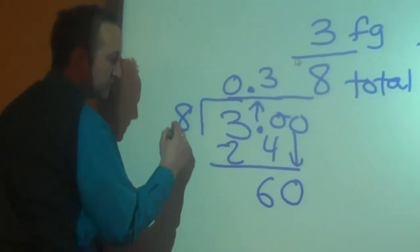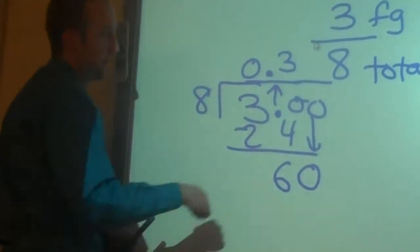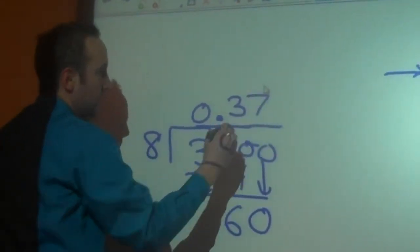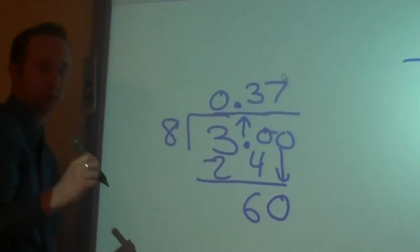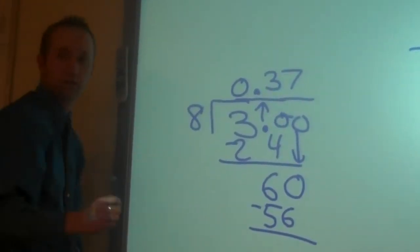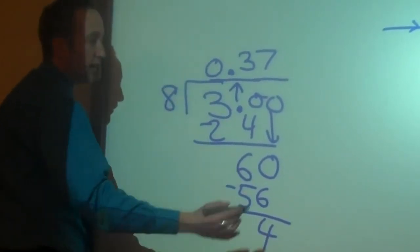We keep bringing down zeros. How many times does eight go into sixty? Seven. Seven times. I'm going to give myself some space here. Goes in seven times. And eight times seven, Will, is? Fifty-six. Fifty-six. And sixty minus fifty-six? Four. Four. Still not done.